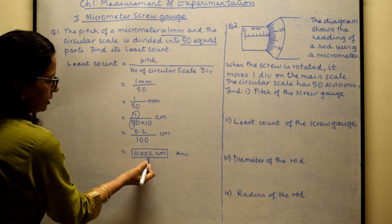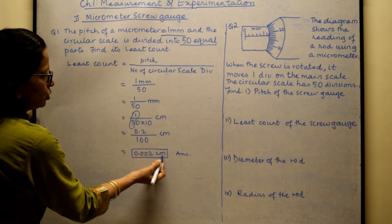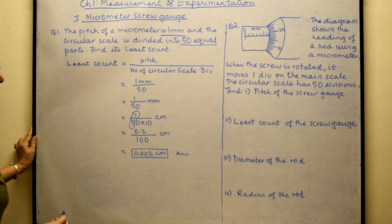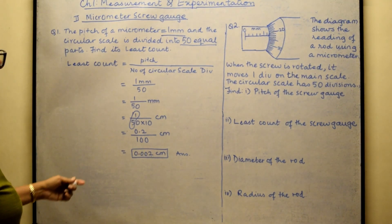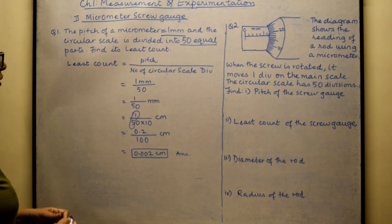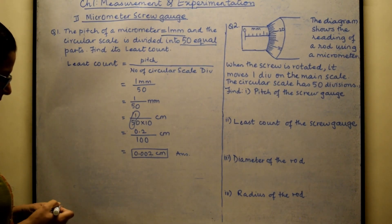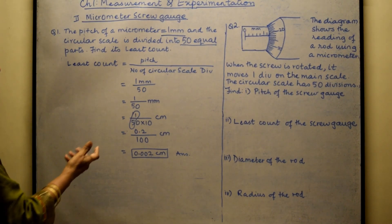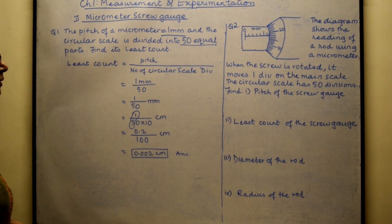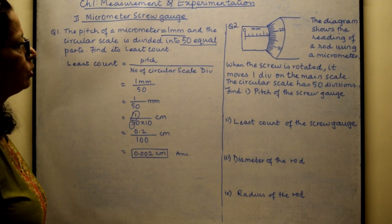So 0.002 centimeter is our answer as the least count. This means the accuracy of the micrometer is thousandths of a centimeter. Now let us look at Question 2.